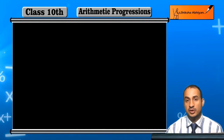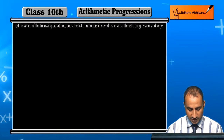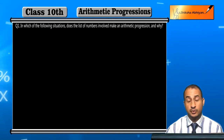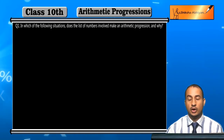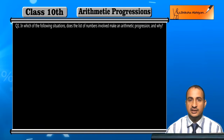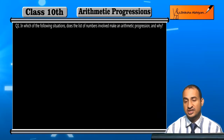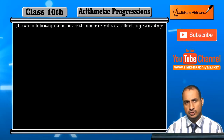See the first question. The question is: in which of the following situations does the list of numbers involved make an arithmetic progression, and why? We have some situations, and we will see whether the numbers obtained form an arithmetic progression or not, and give the reason why or why not.